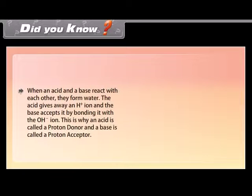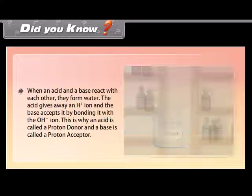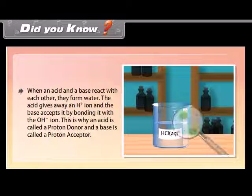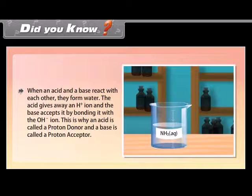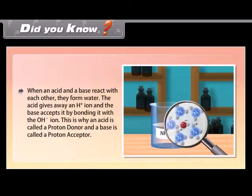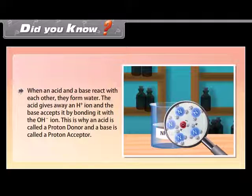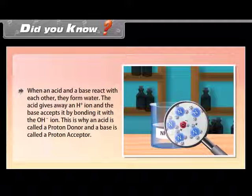When an acid and a base react with each other, they form water. The acid gives away an H+ ion and the base accepts it by bonding it with the OH- ion. This is why an acid is called a proton donor and a base is called a proton acceptor.